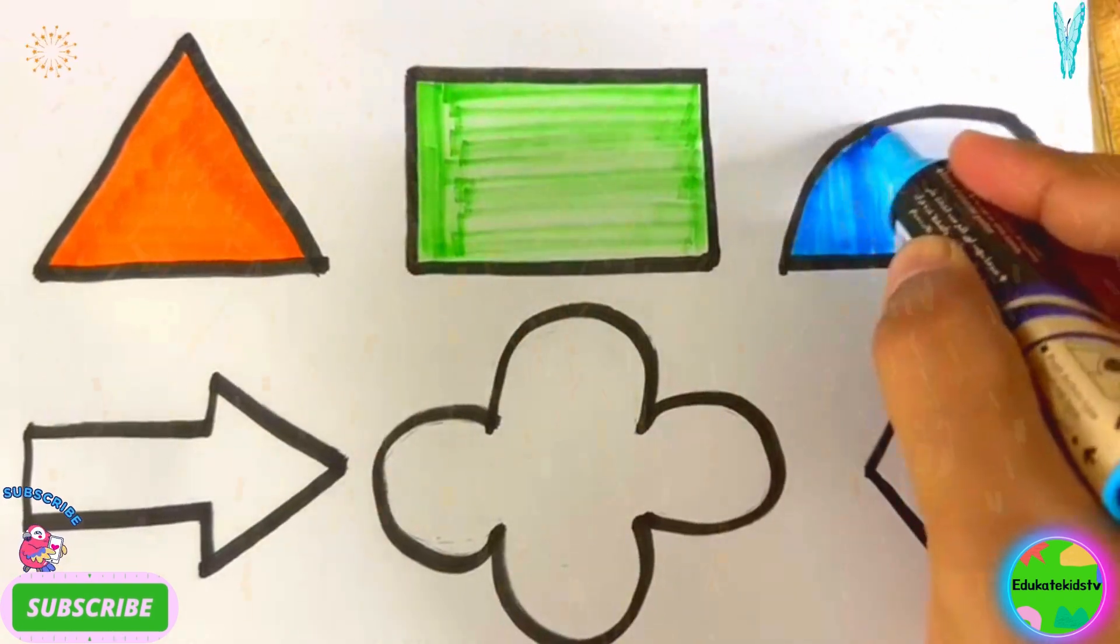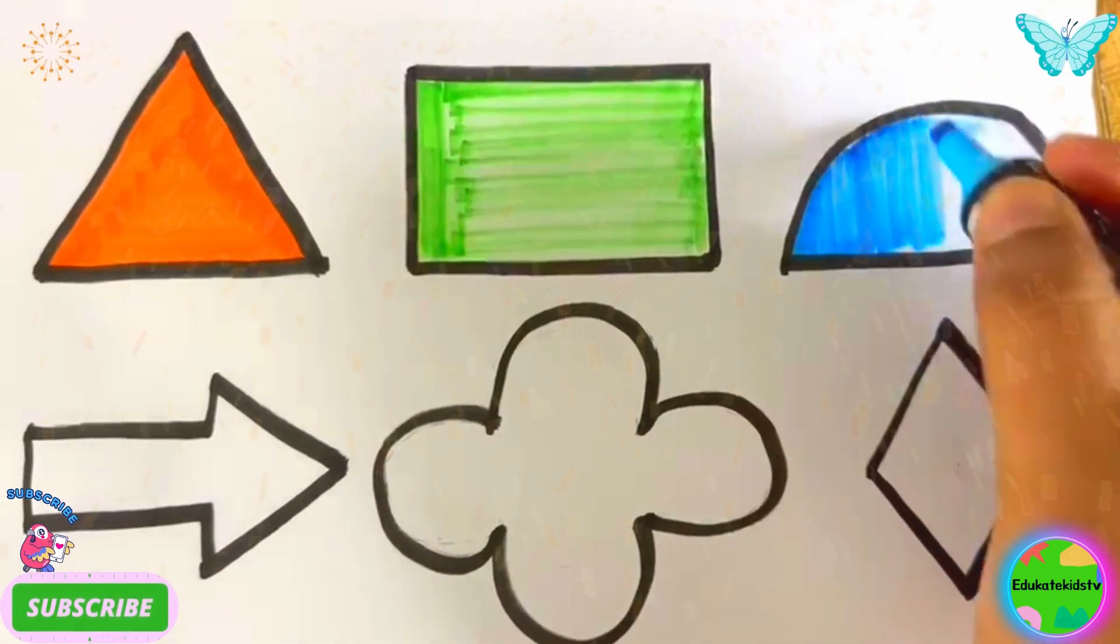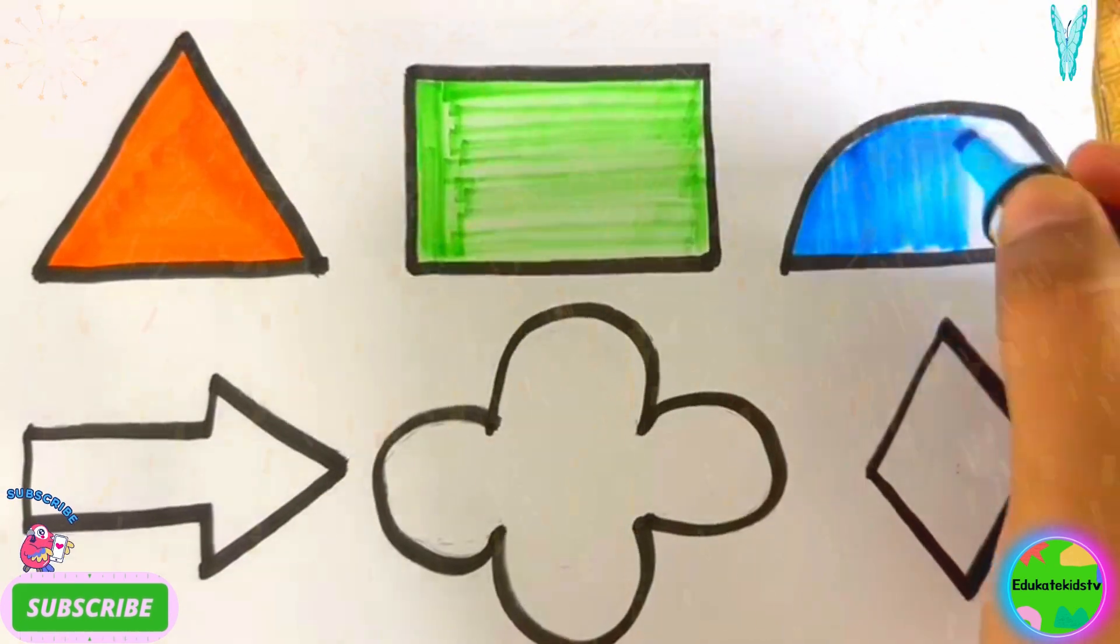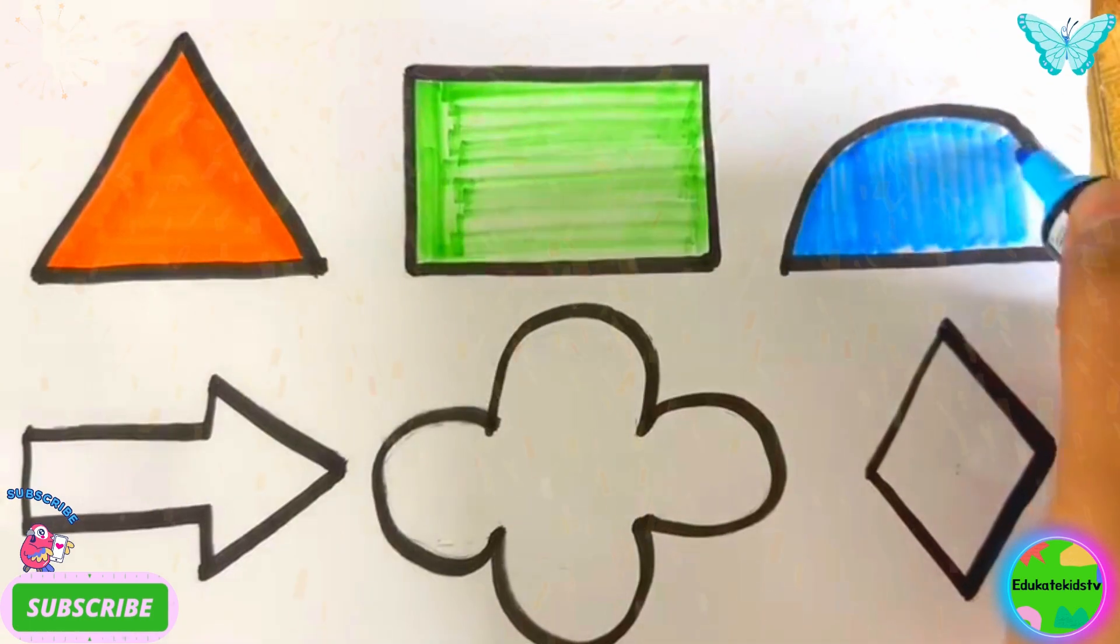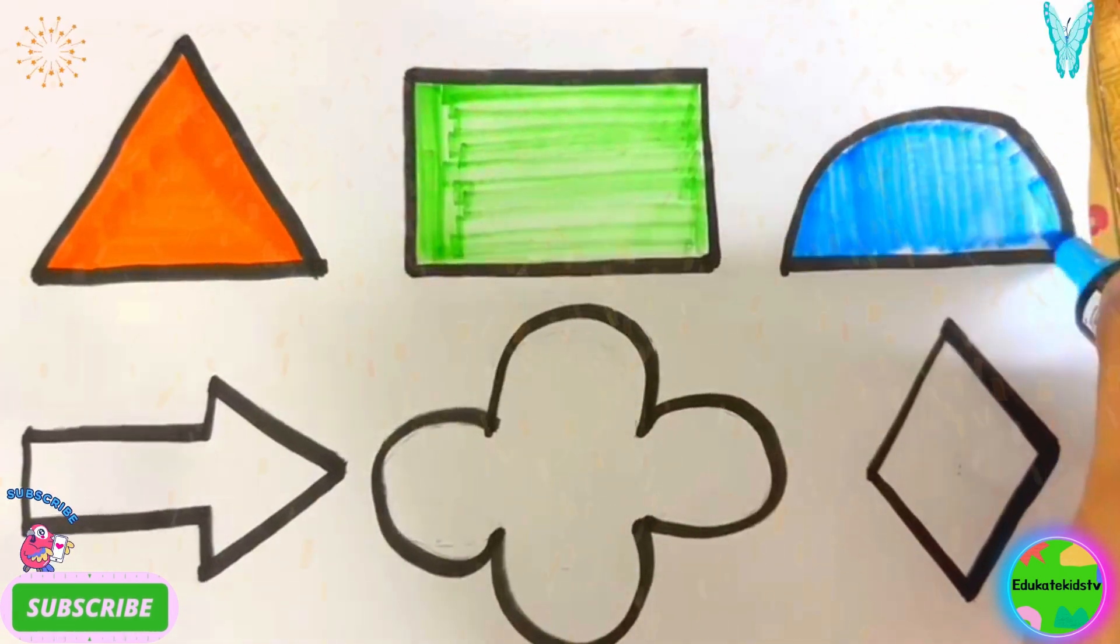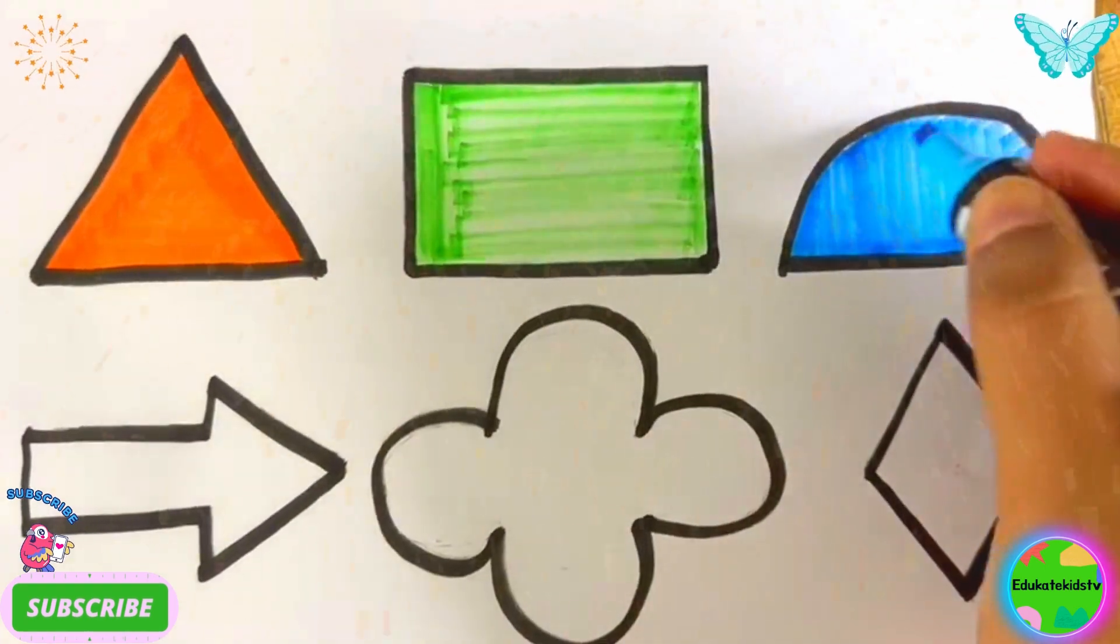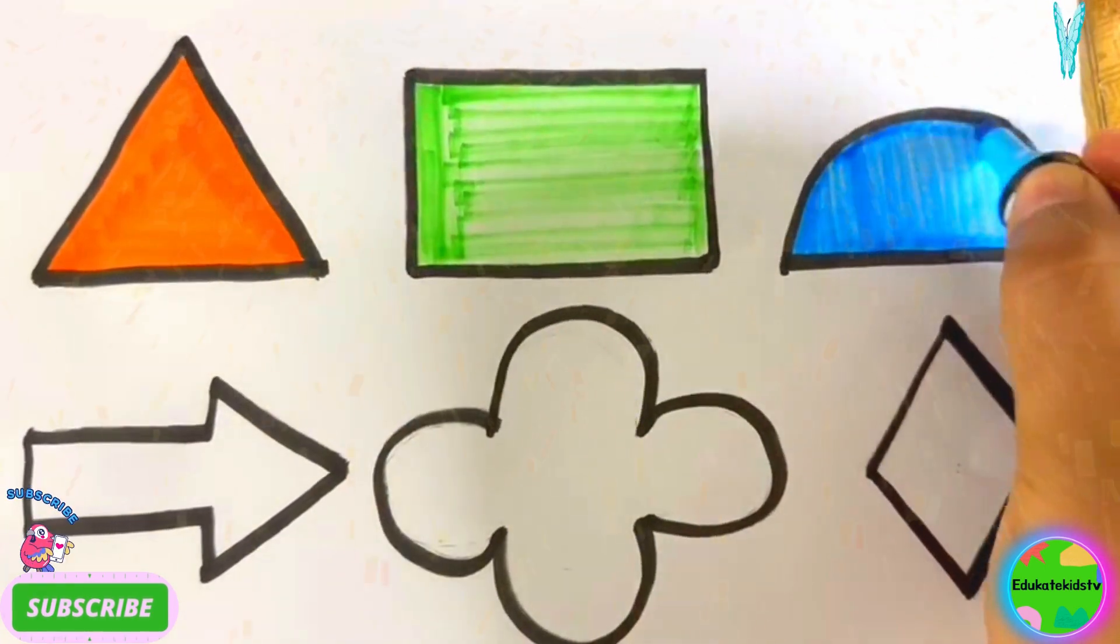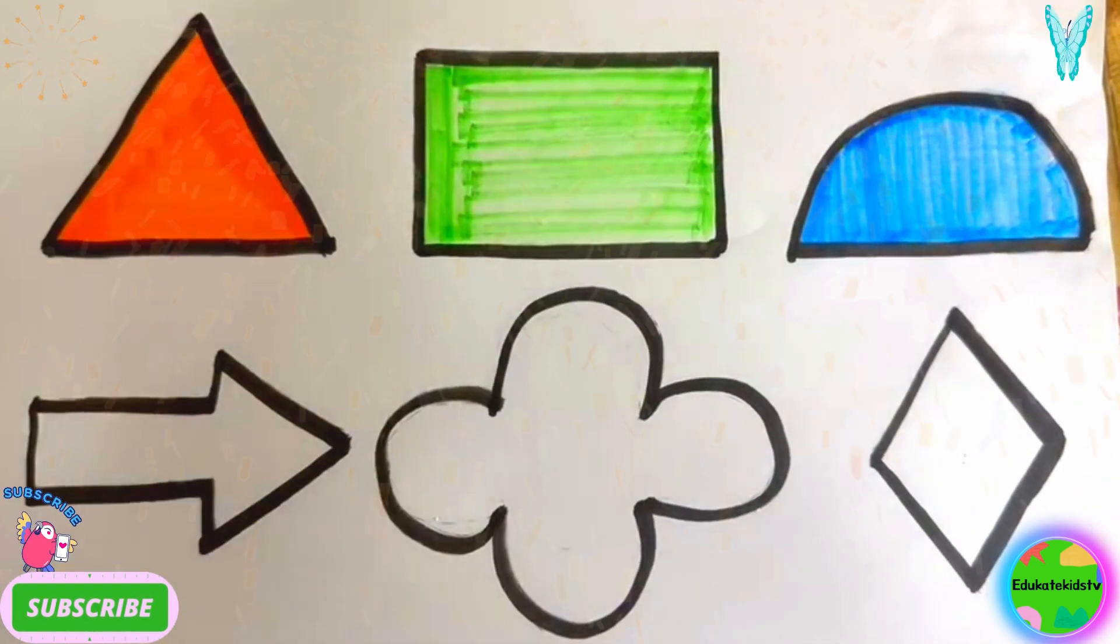Wow, you like it? Hit the like button and subscribe to my channel if you like drawing and coloring the shapes. You will get more interesting shapes and videos here on my channel. Now we will have yellow color and we will color our arrow. Nice, isn't it?